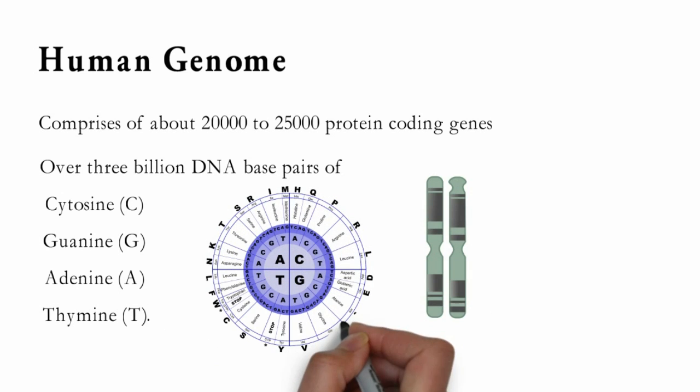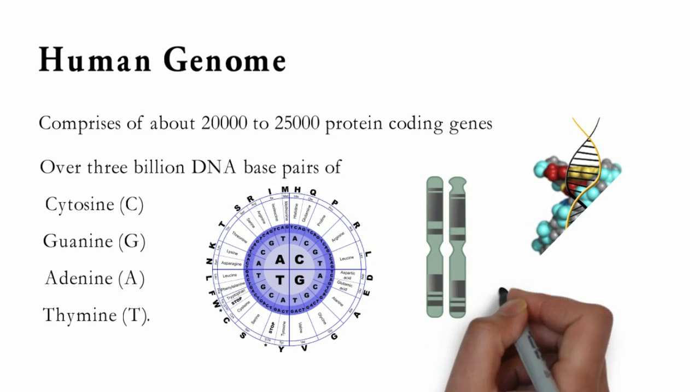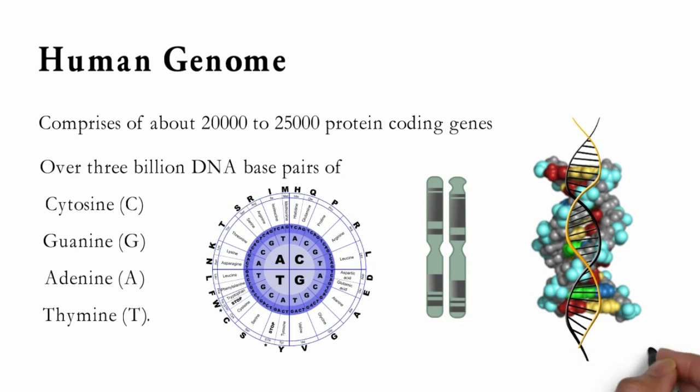Adenine is always paired up with thymine, and cytosine with guanine. This genetic information coded in the double helix, deoxyribonucleic acid, DNA, which is present in each cell, working as an instruction manual determining the functioning of living cell.